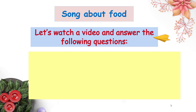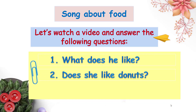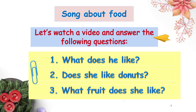There are three questions for you. Question number one: What does he like? Question number two: Does she like donuts? Question number three: What fruit does she like? Let's watch it.